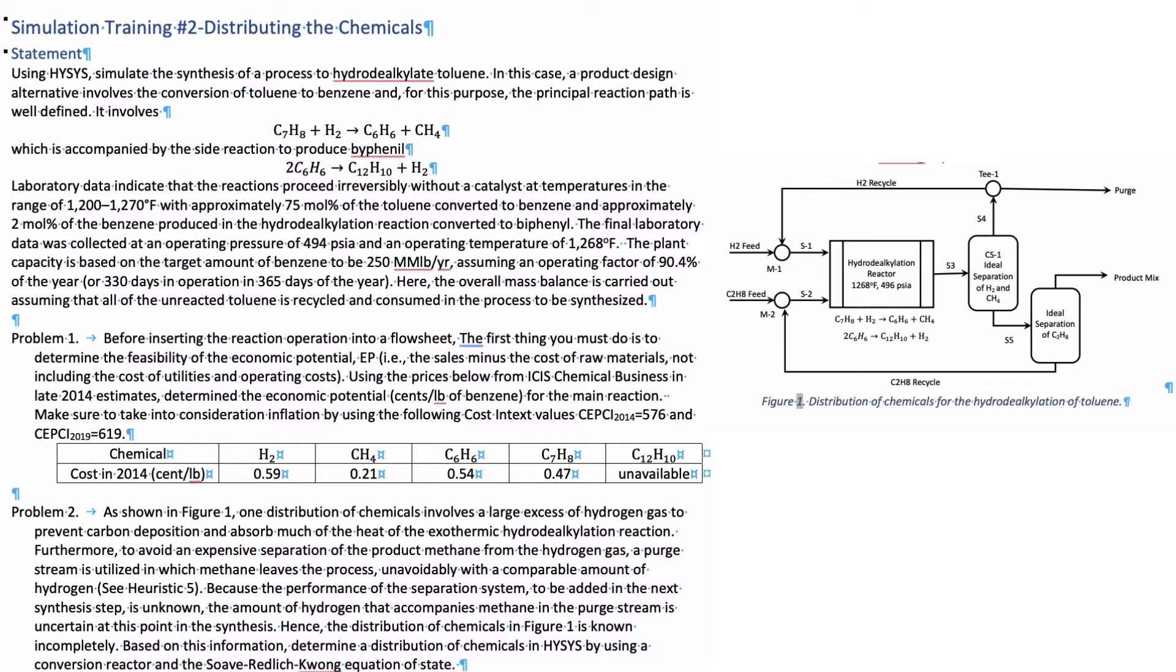The main focus of this video is to show you the initial stages of process design. The first thing we have to do after we decide what the chemical reaction pathway is, is to distribute the chemicals in the process flow diagram.